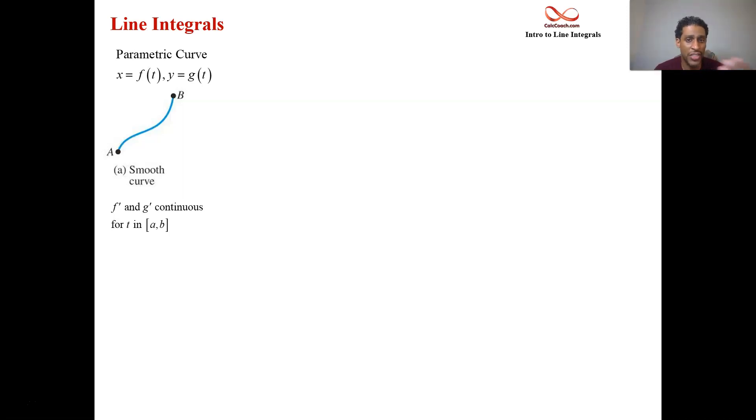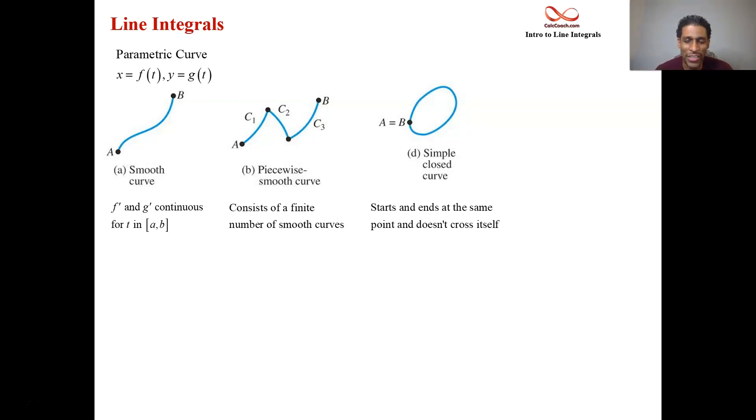Now if the entire curve isn't smooth like the one we have here, then what we could have then is the curve could be smooth in pieces, made up of finite number of smooth pieces. It's possible that the curve could be closed. What that means is that the starting point and ending point is at the same place. We want to even dig deeper though and tag this type of curve as a simple closed curve. Simple in the fact that it doesn't cross over itself.